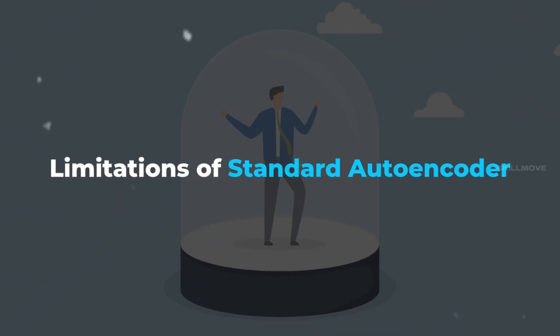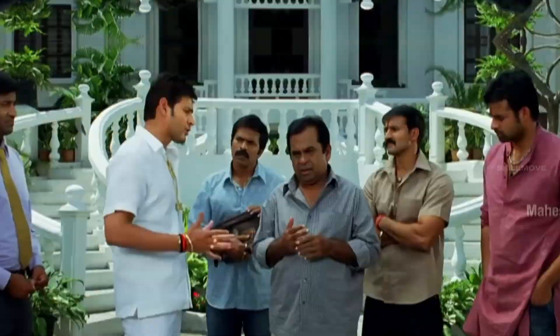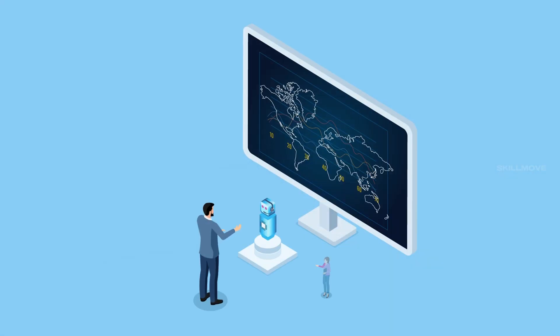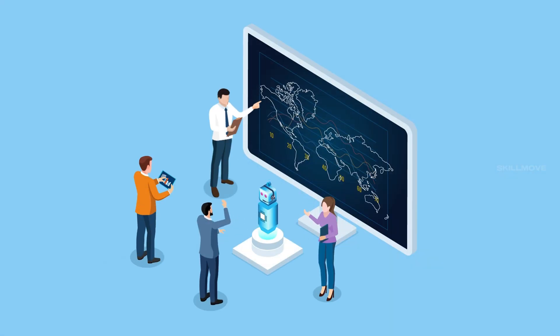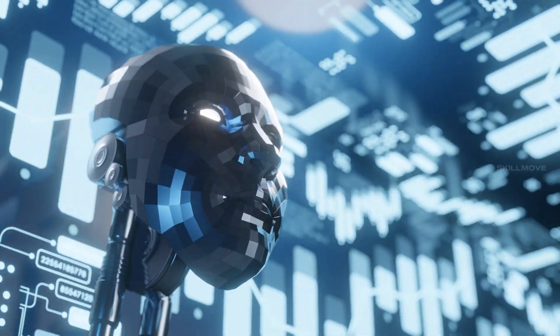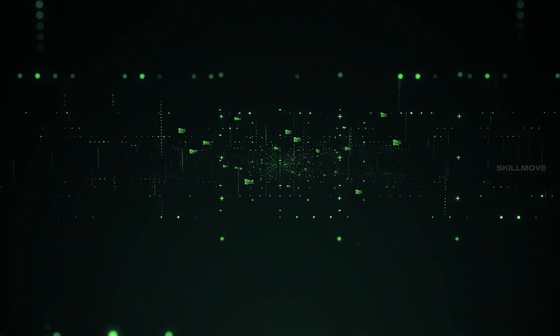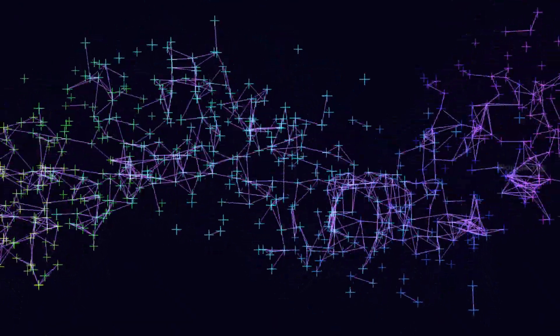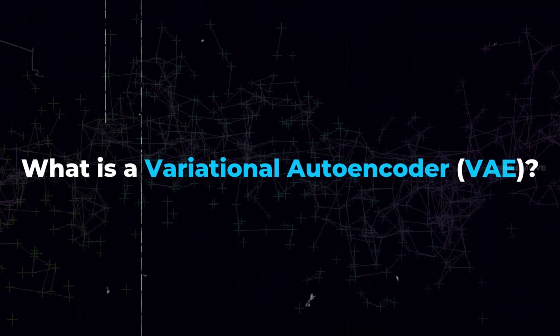Next, limitations. In the standard autoencoder, there are a lot of different representations, so generating new data is difficult. To randomly create meaningful content, we can use a generative model. If we want synthetic data or image generation, we use variational autoencoders.